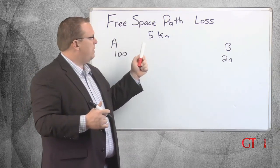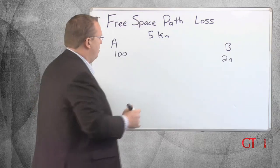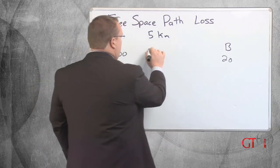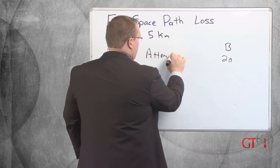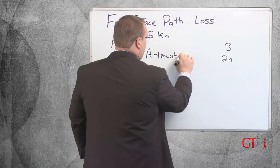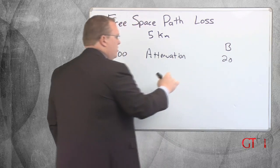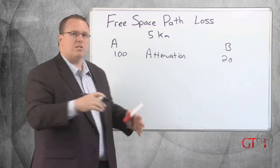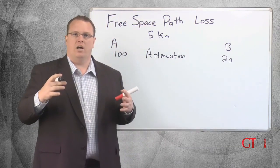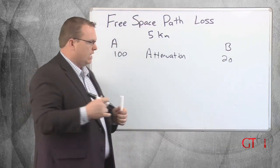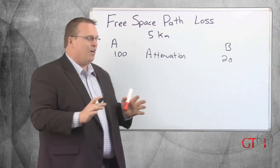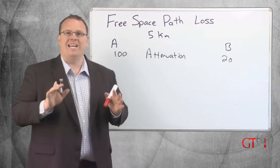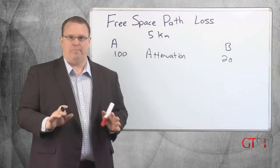Free space path loss is a combination of attenuation — which is something we talked about, the inverse square law — and the other component is called antenna aperture.